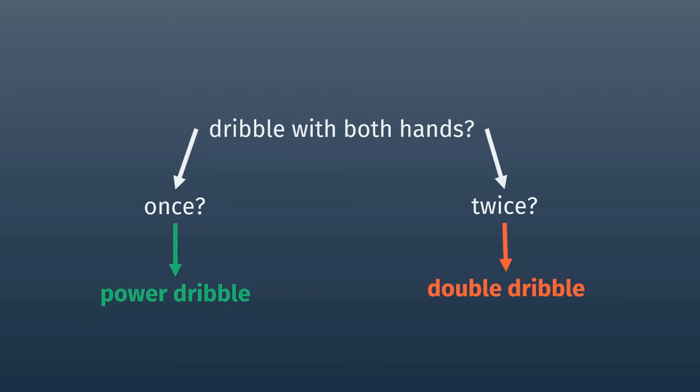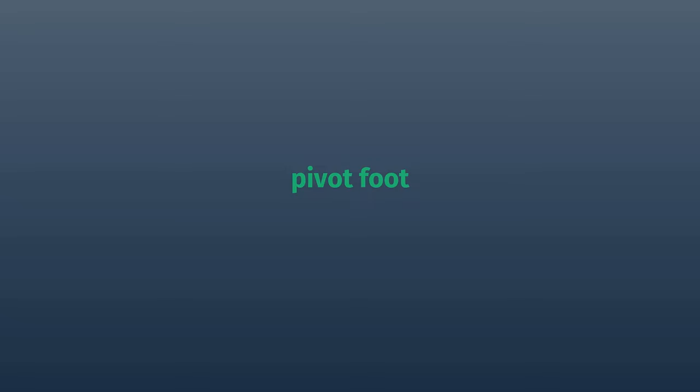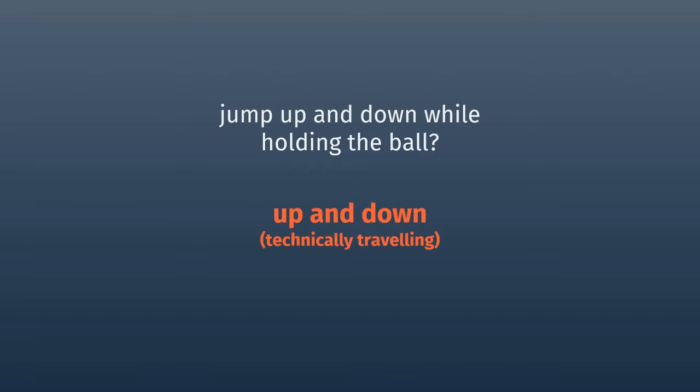Okay, so you've stopped dribbling. Either your right or your left foot must stay on the ground, but you can move the other one. The one that stays in the same spot is called your pivot foot. The only way your pivot foot can leave the ground is if you jump to shoot the ball or pass it to a teammate — because if at any point you jump up with the ball and don't let it go before you land again, that's called up and down, and the other team gets the ball.